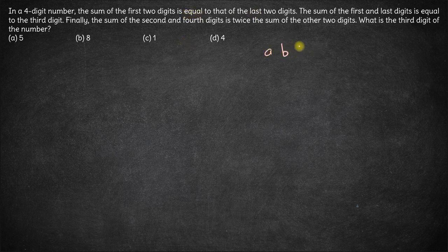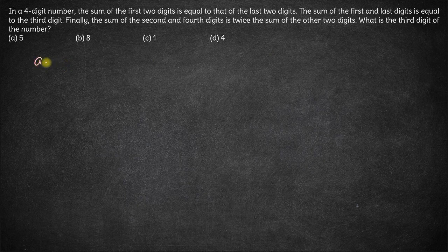So let's say the number is A, B, C, D. A is the first digit, B is the second, C is the third and D is the fourth digit.